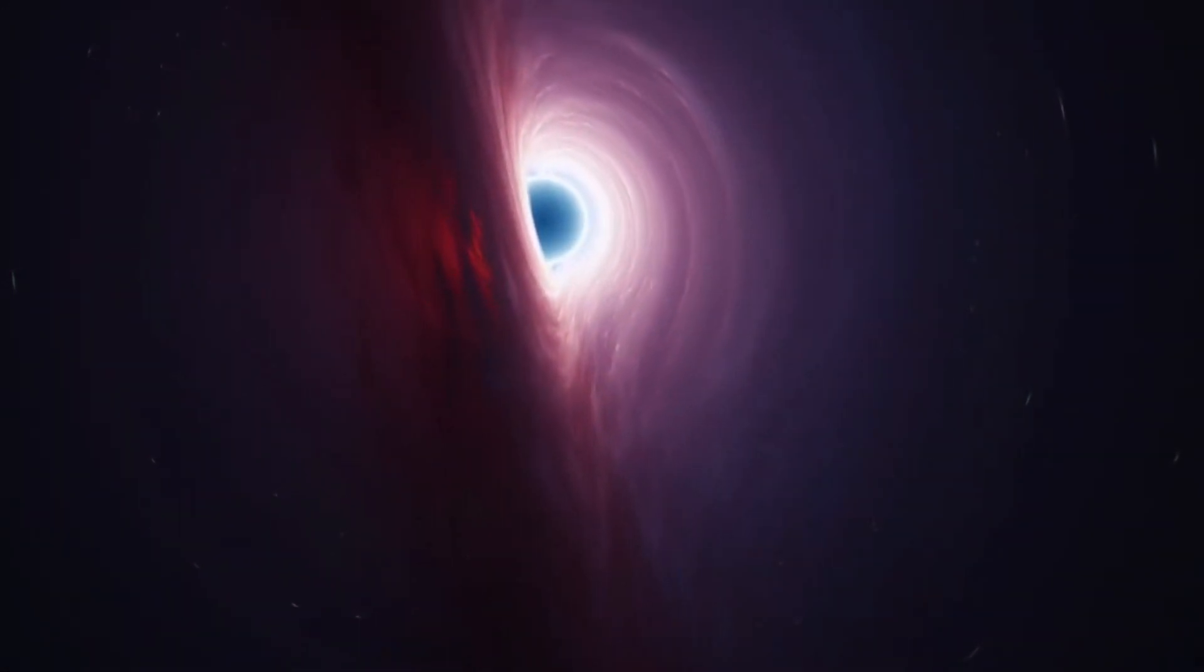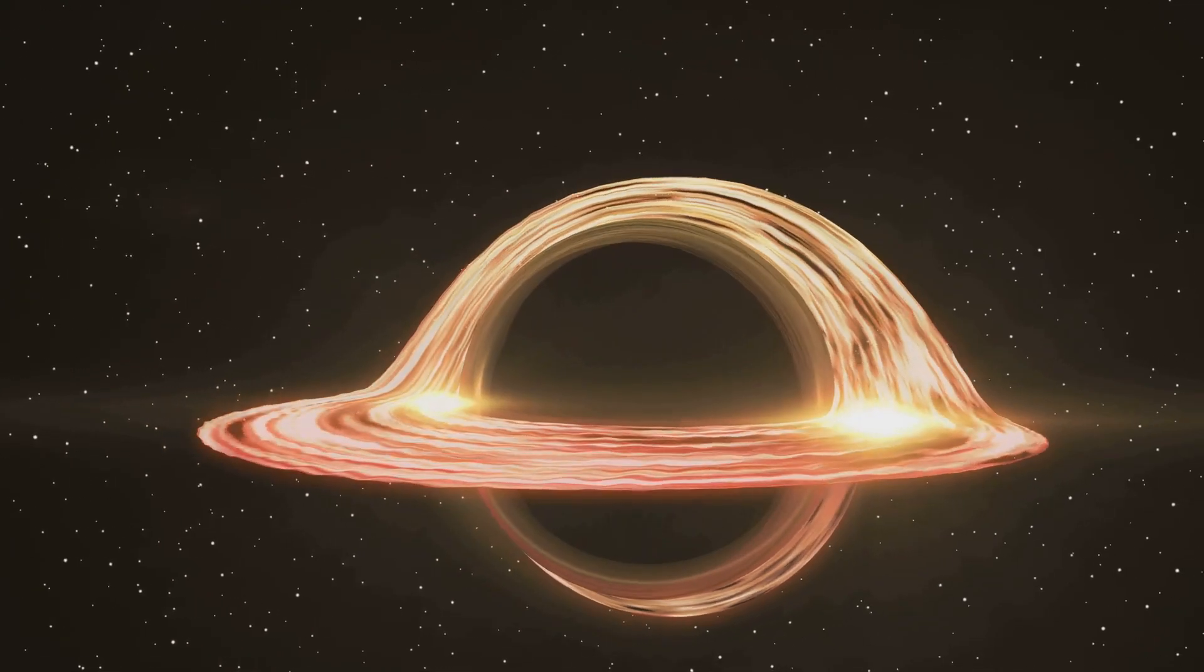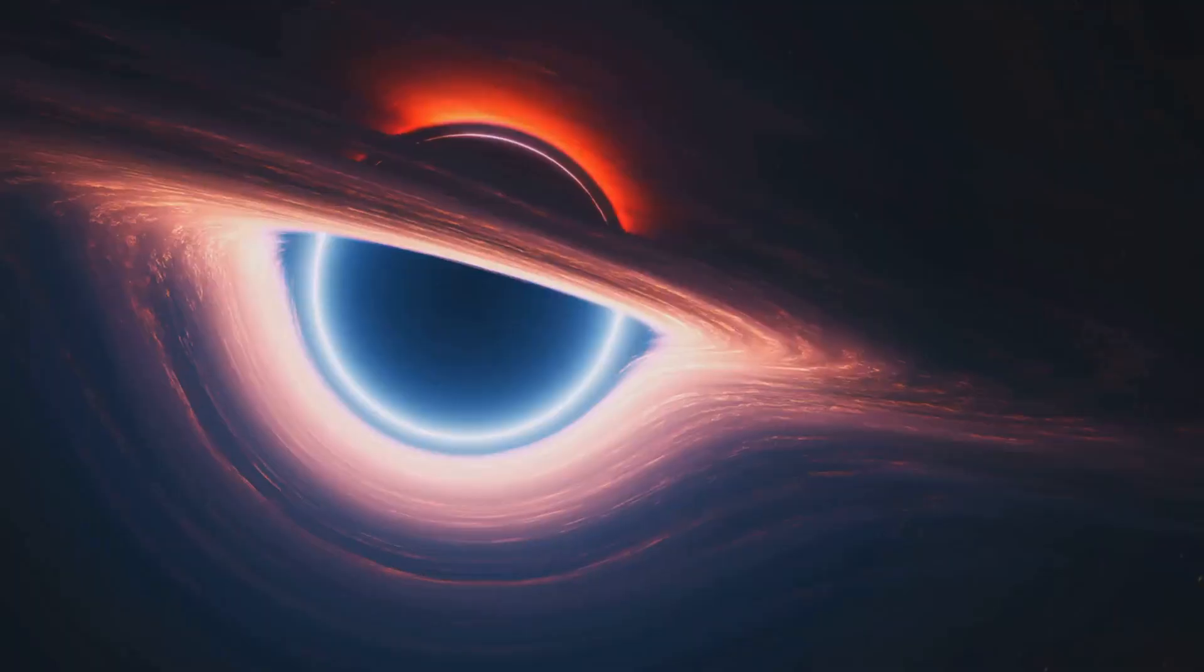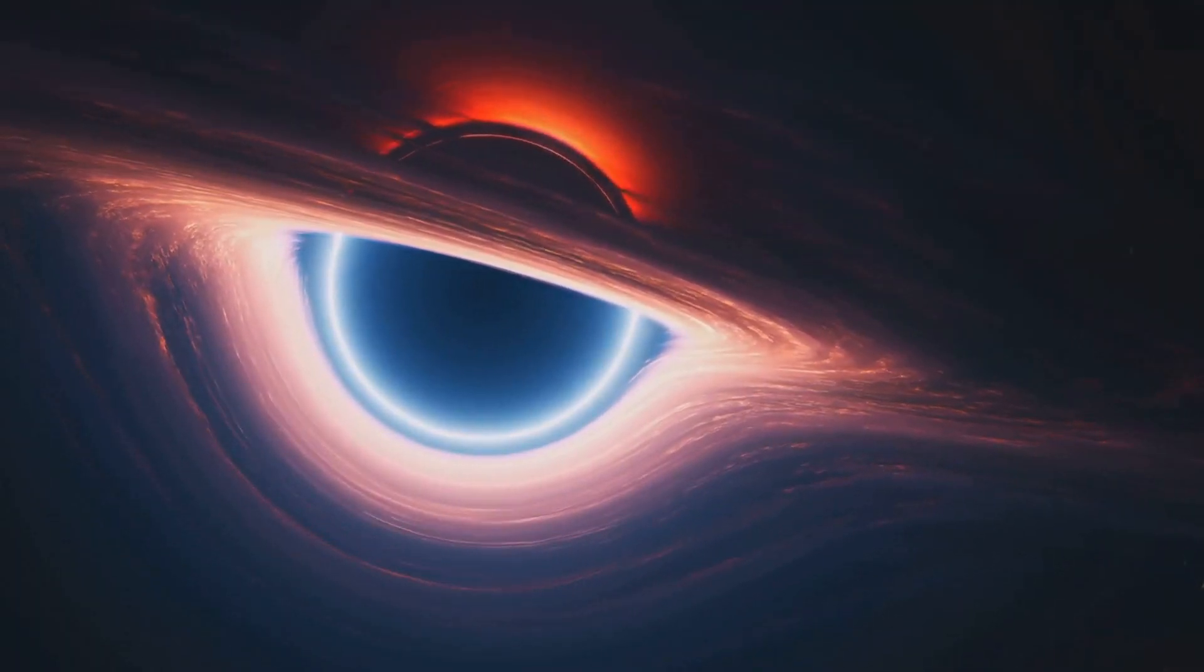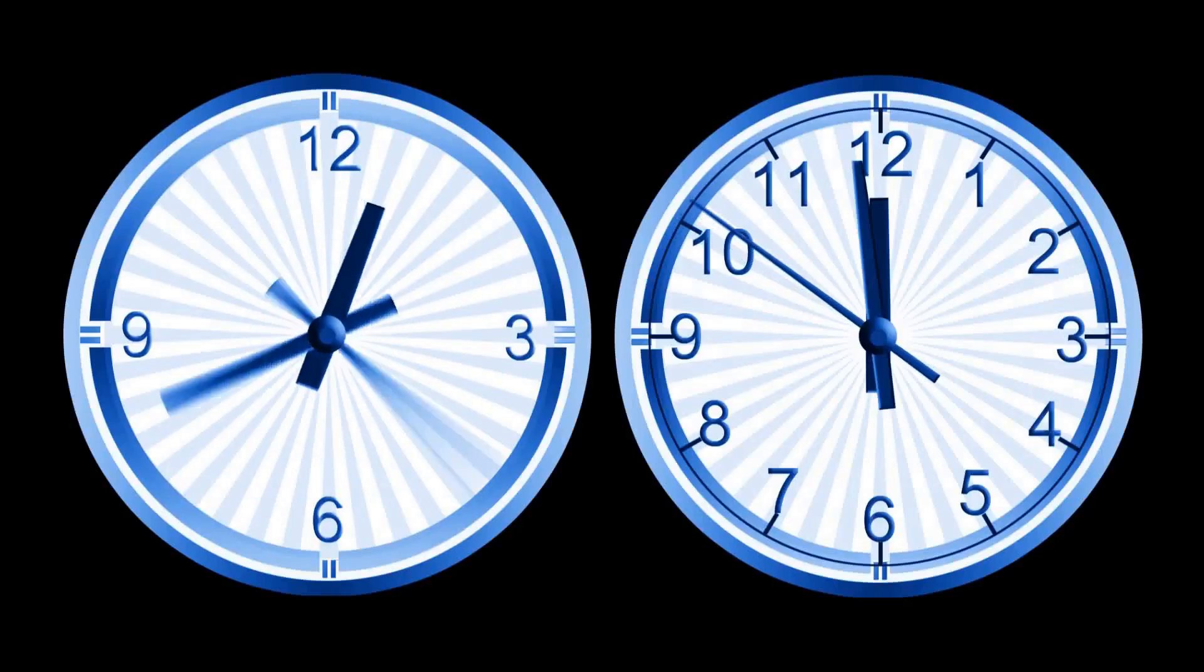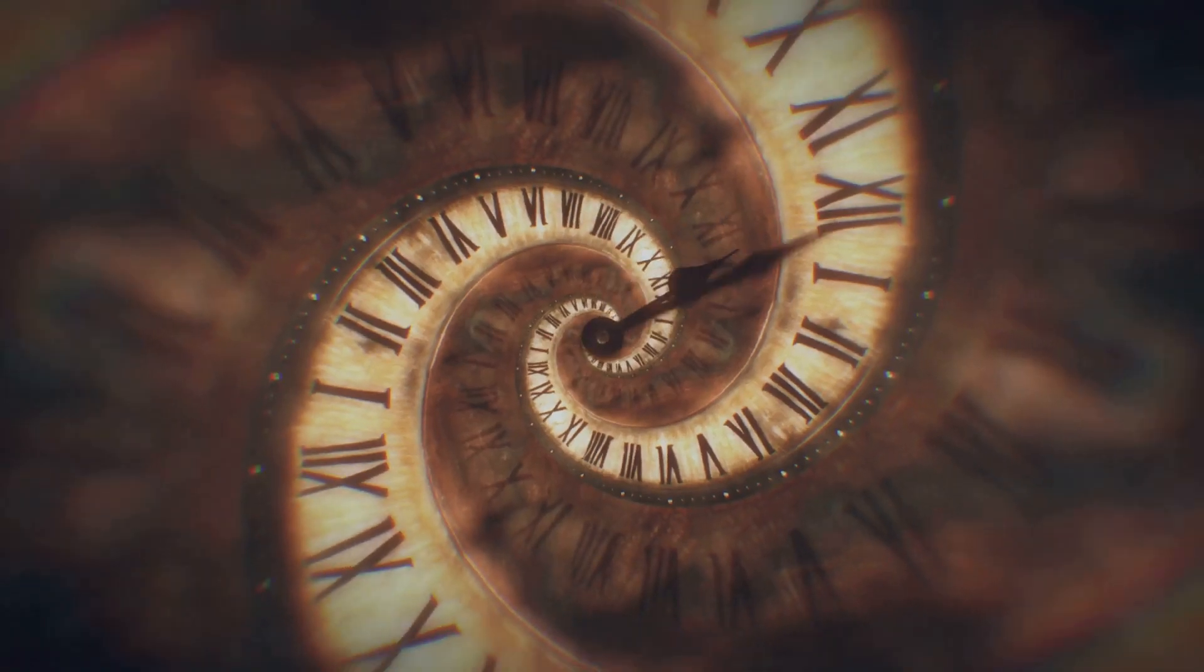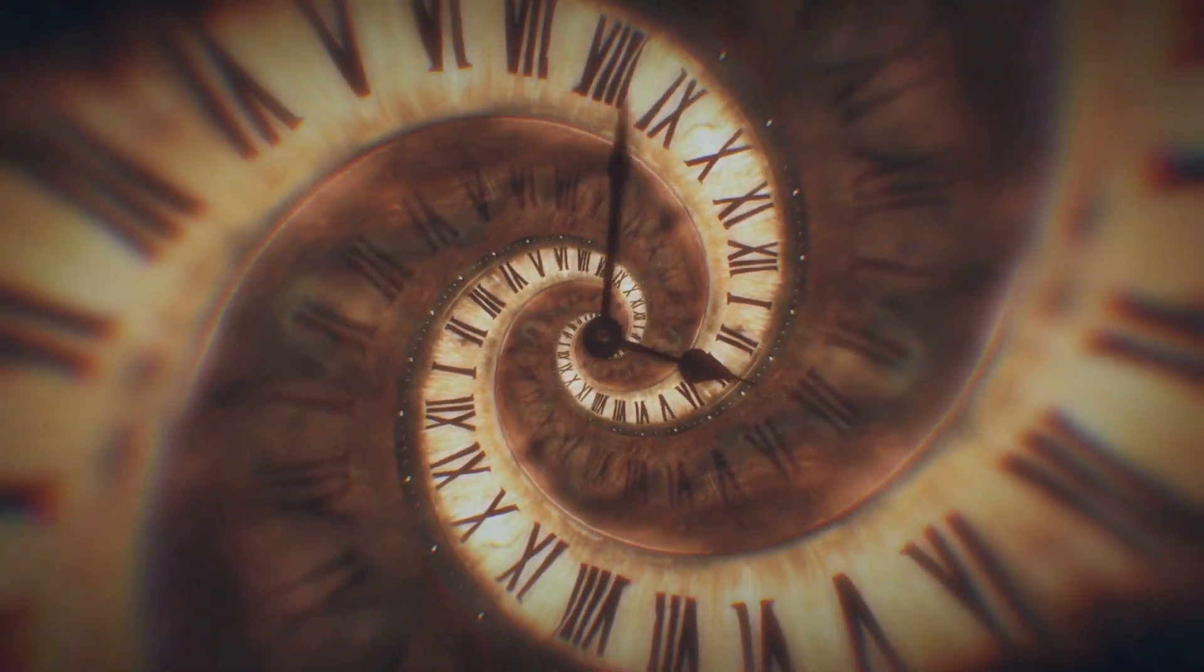One of the most mind-bending aspects of black holes is their effect on time. According to Einstein's theory of general relativity, gravity affects the flow of time. Near a black hole, this time dilation effect becomes extreme. Imagine two identical clocks, one far from a black hole and one near its event horizon. The clock near the event horizon would tick much slower.